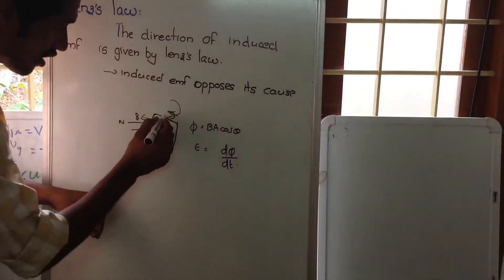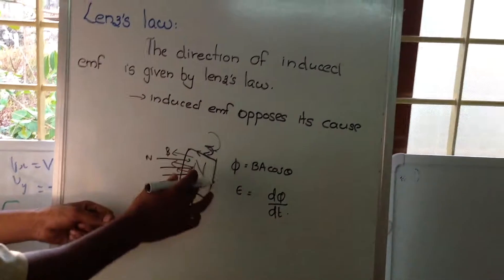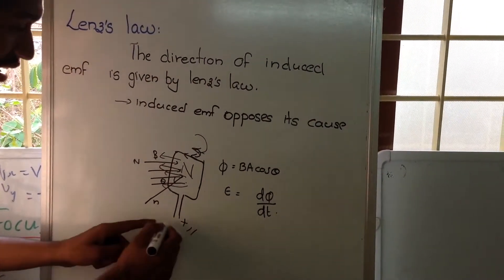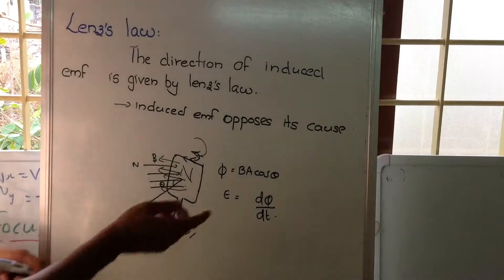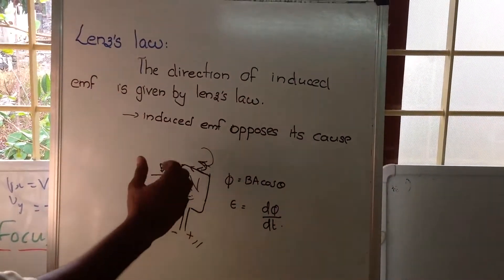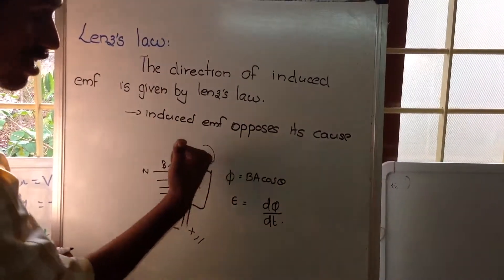Suppose if the current is flowing in this direction, the plus sign is created here and the minus is created here. So, then by our law, the magnetic field induced there will be like this by right hand rule.